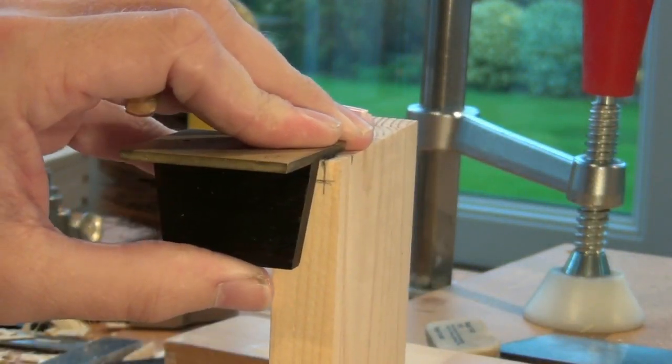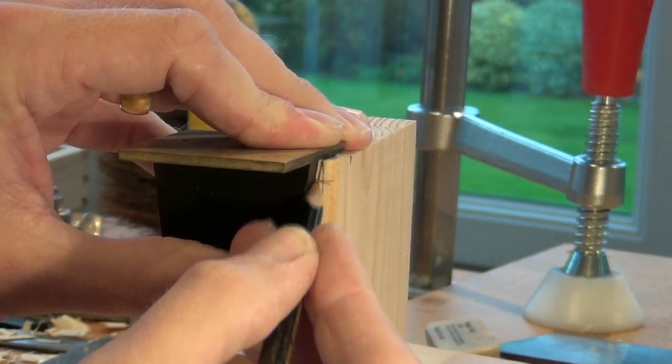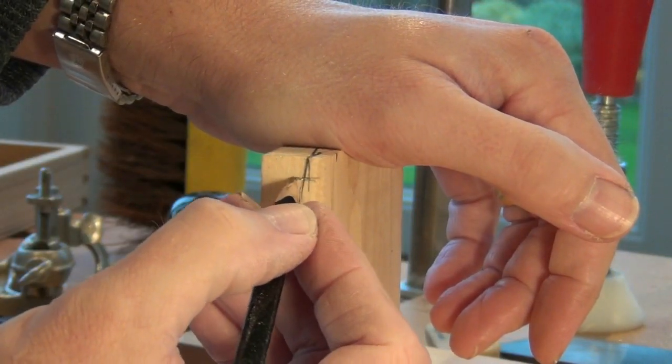Now we can use a 1 in 6 dovetail marker to mark the end of the dovetail. And that needs to be cut down to the gauge mark.